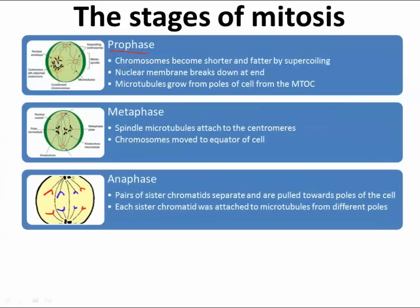Separation — anaphase. Anna went through a phase of breaking up. You see the sister chromatids are separating. The pairs of sister chromatids separate and are pulled towards the poles, each one attached to microtubules. It's like tying a worm in the midsection with string and pulling — the two ends drag apart. Only the centromeres have these microtubules attached to them.